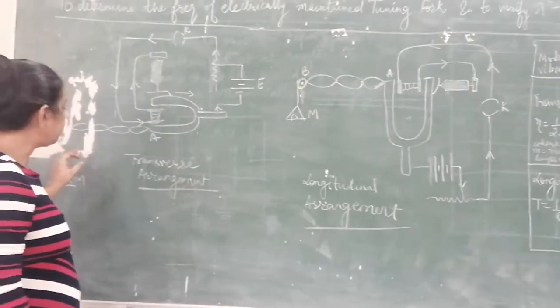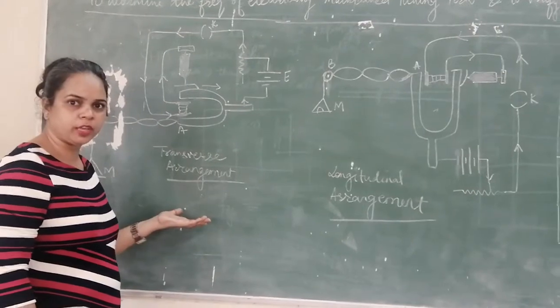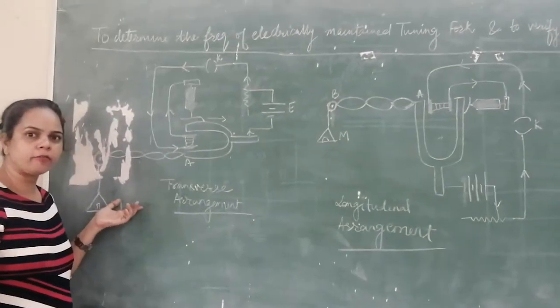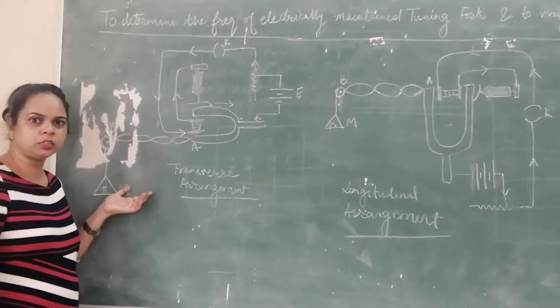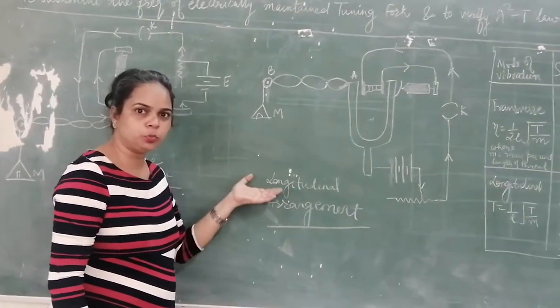What we see here is that the number of loops obtained in the longitudinal arrangement is half as compared to the number of loops that were there in the transverse arrangement for the same weight. If for 100 g of weight you are having 14 loops in this transverse arrangement, then in longitudinal arrangement you will have 7 loops for 100 g.